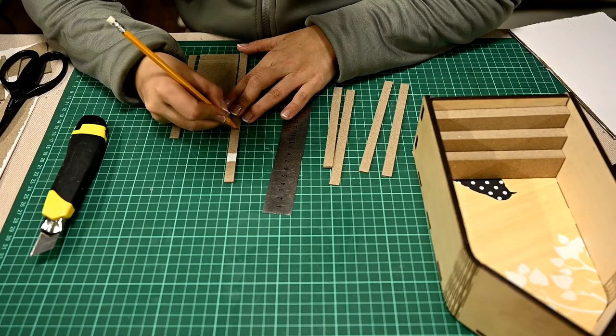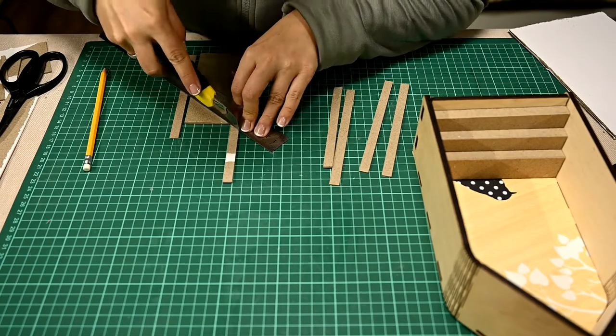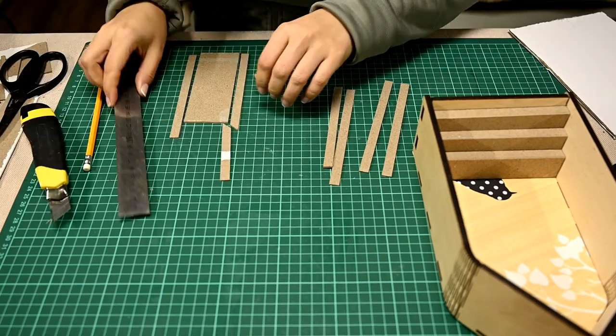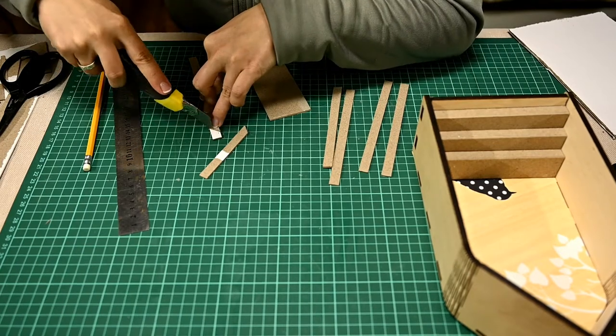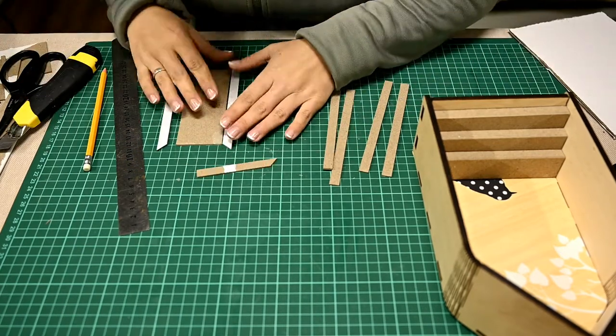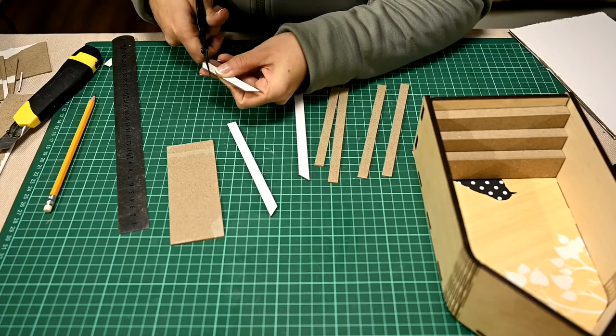The next element is a door. I cut out a rectangle from cardboard and I'm making a frame for it from thin strips of cardboard. I'm cutting the strips at 45 degrees to make them look like real flat bands.